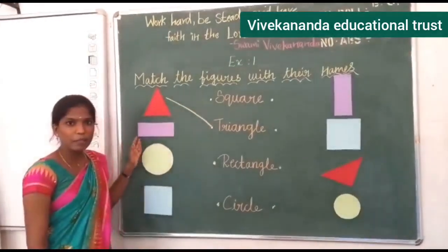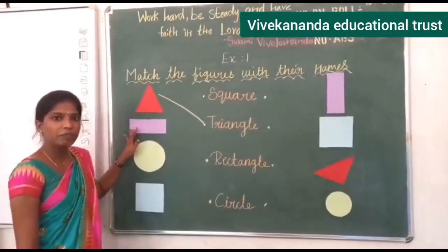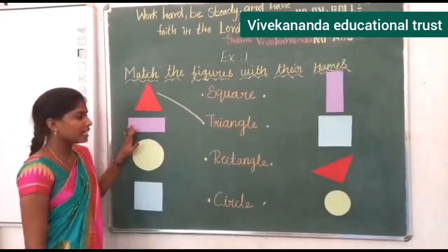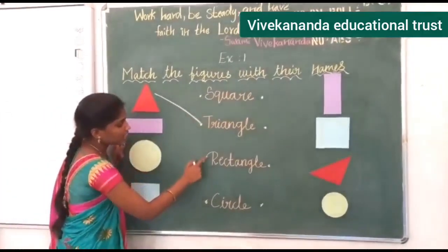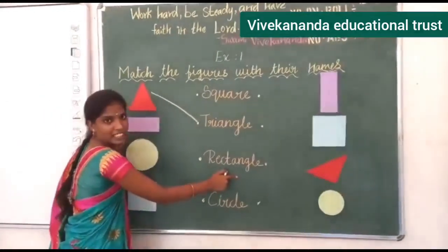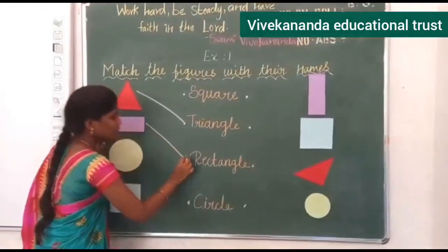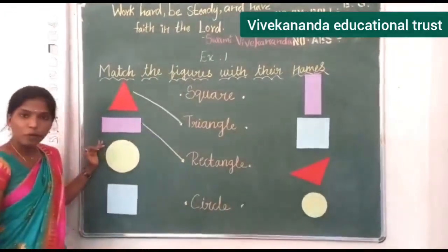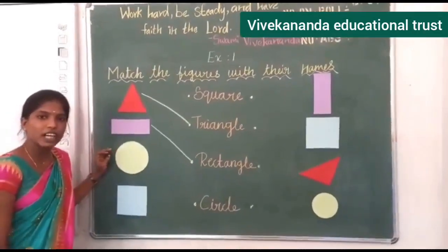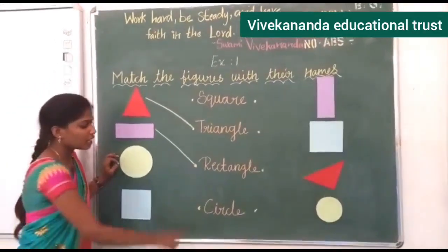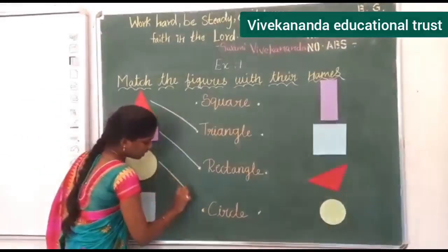Next, what shape is this? Rectangle. What is the spelling for rectangle? R-E-C-T-A-N-G-L-E. Where is it? R-E-C-T-A-N-G-L-E — here. So match rectangle to rectangle. Next, what shape is this? Circle. What is the spelling for circle? C-I-R-C-L-E. So match circle to circle.